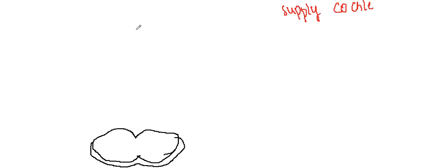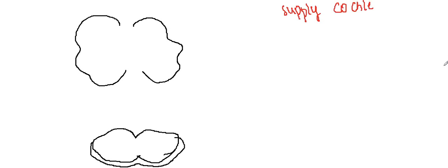From the inferior colliculus, the pathway reaches the thalamus — specifically a body called the medial geniculate body, which is present near the thalamus. From the medial geniculate body, the signal finally reaches the auditory cortex. There are two separate tracts: one for the vestibular nerve and one for the cochlear division.